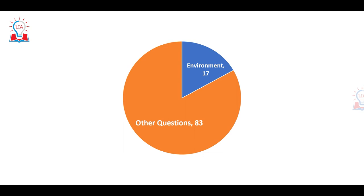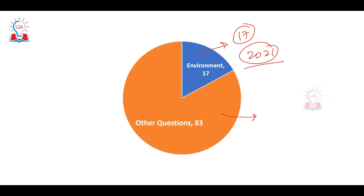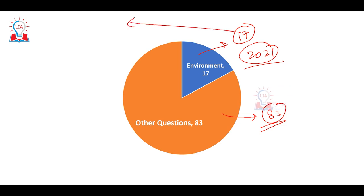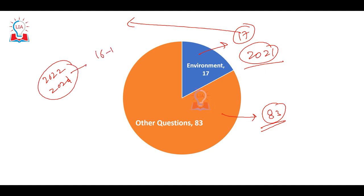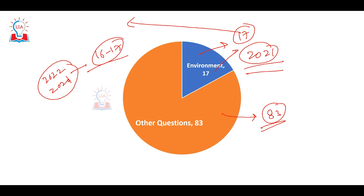In 2020, how many questions were asked from the environment section? A total of 17 questions — that is a big chunk out of 100 total questions that you cannot ignore. As already seen in 2022 and 2021, UPSC regularly asks more than 16 to 17 questions from the environment section. Now we will analyze them one by one and try to find the answers, which match the UPSC answer key.